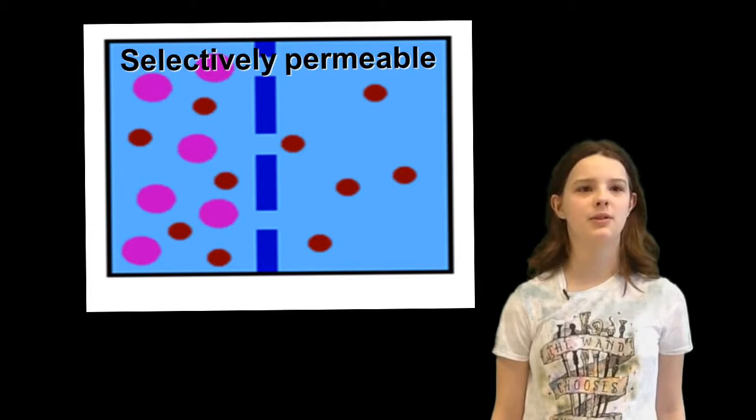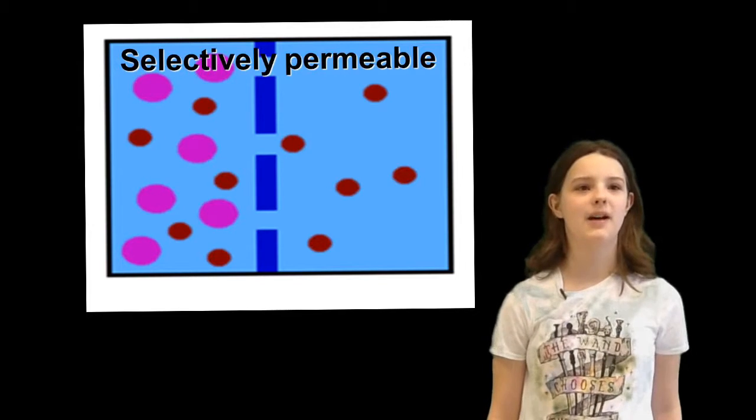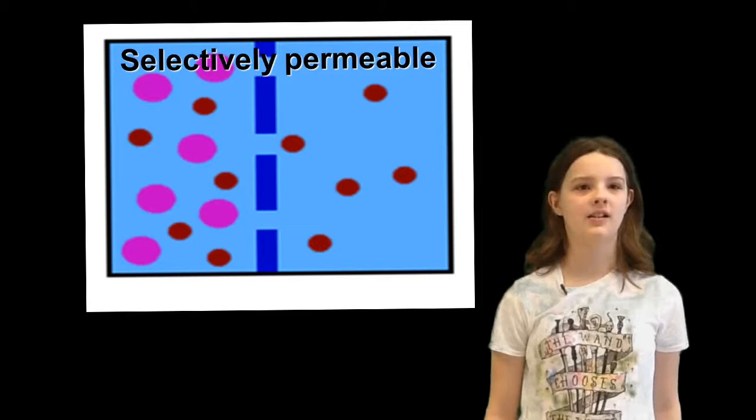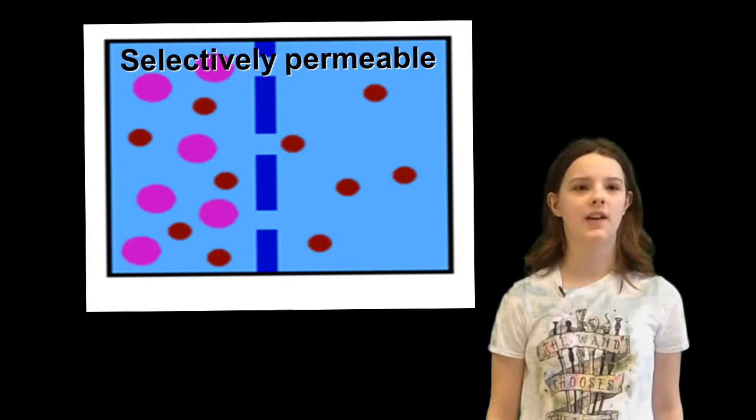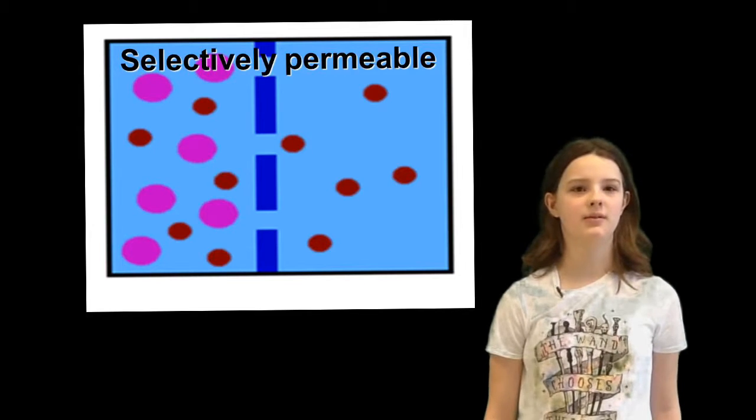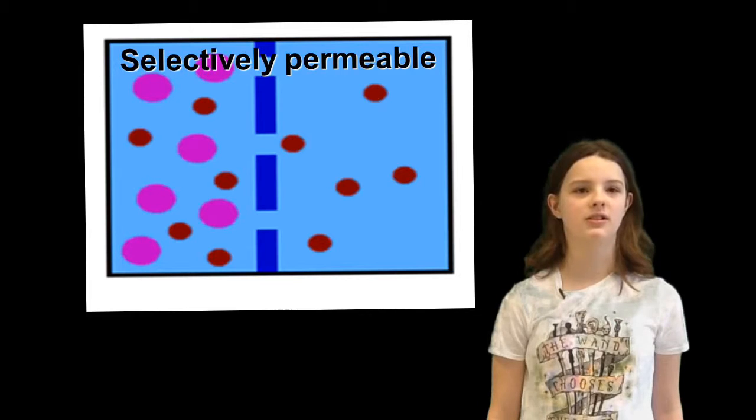Selectively permeable is the process by which some substances can pass through while others cannot. An example of this is a membrane. The cell membrane isn't permeable to some lipid molecules and salt.